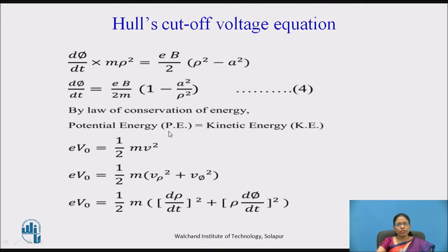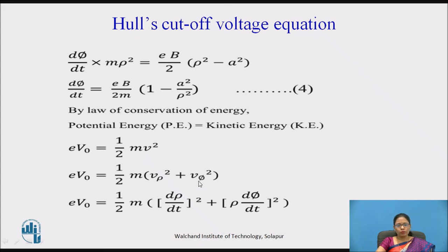According to the law of conservation of energy, potential energy equals kinetic energy: EV₀ = ½mv², where V₀ is the voltage applied between anode and cathode and v is the velocity attained by the electron. This velocity has two components: radial (V_rho) and angular (V_phi). So EV₀ = ½m[(d rho/dt)² + (rho · d phi/dt)²], where the factor rho arises from the cylindrical coordinate system multiplier for the phi component.